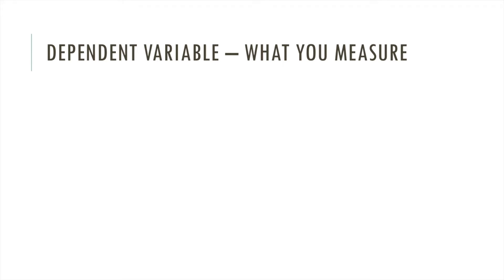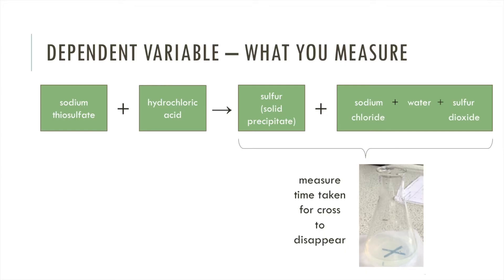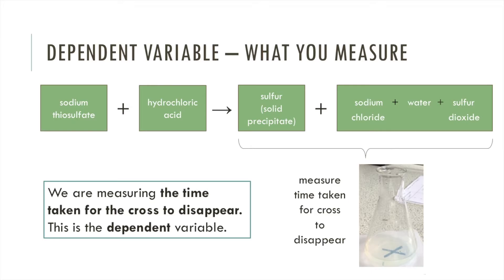The dependent variable is defined as what you measure in a reaction. Looking back at our method, we're measuring the time taken for the cross to disappear. So that is our dependent variable.